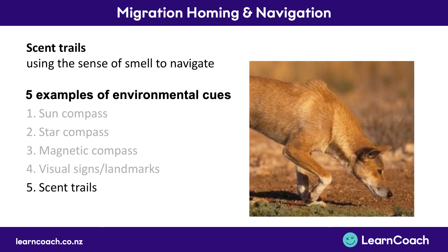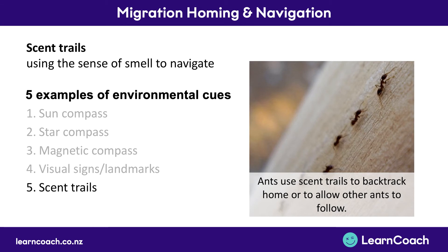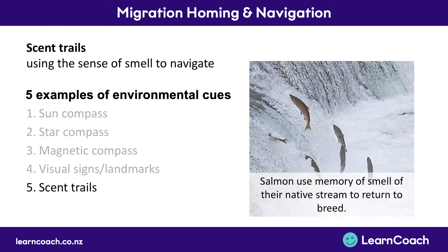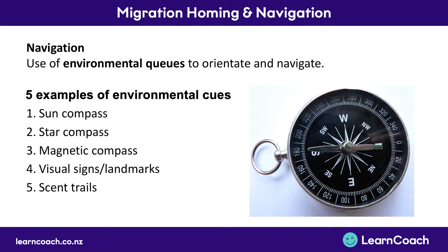The fifth navigation tool is scent trails. For example, dogs can find rabbits by following their scent. Ants lay down a trail as they explore — either so they can find their way back to the nest, or so other ants can follow if they find something good. Salmon use their memory of smell to return to their native stream where they were born, when they return to breed once in their lifetime.